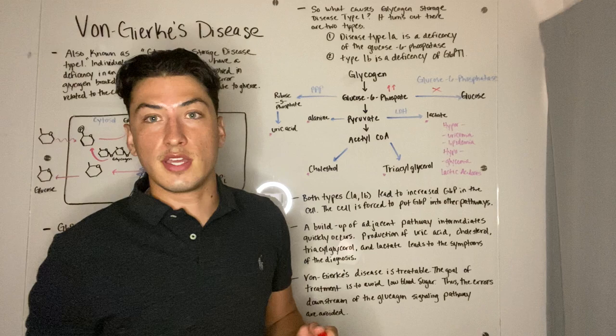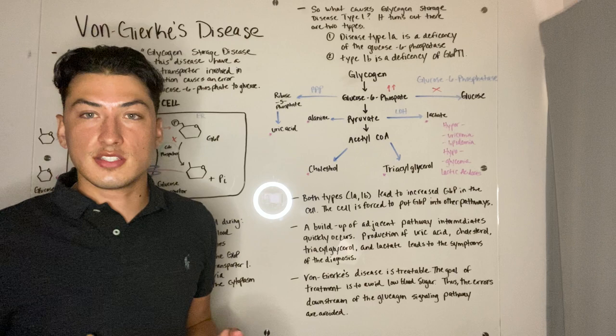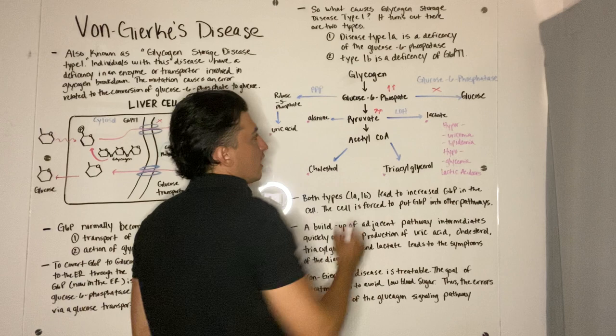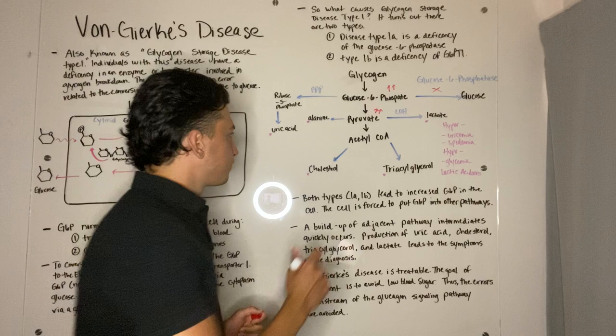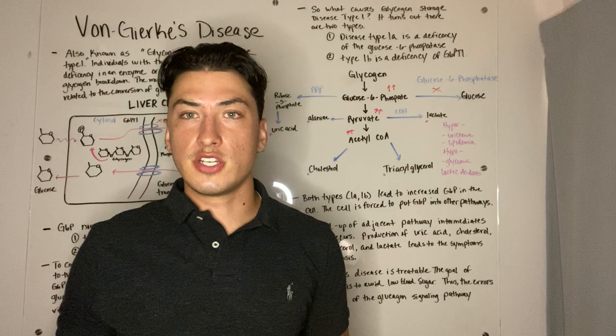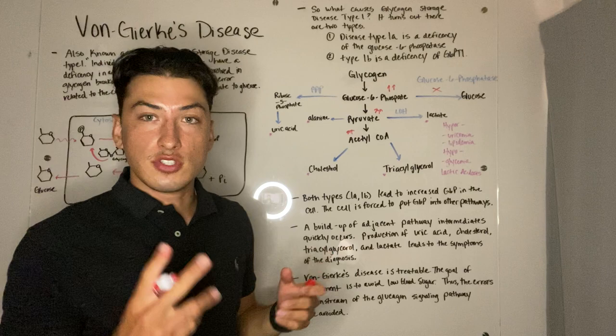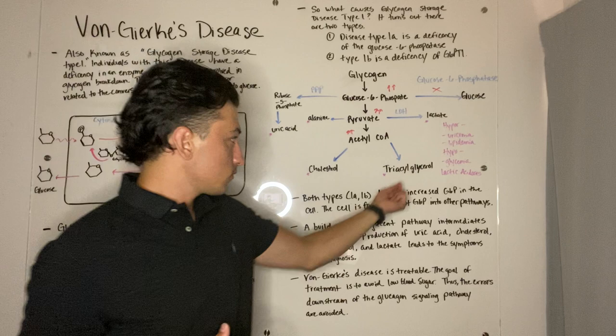So our glucose 6-phosphate will undergo glycolysis and produce pyruvate. Increased levels of pyruvate from glycolysis will feed into the pathways of acetyl-CoA, lactate, and alanine. An increase in acetyl-CoA will eventually overwhelm the citric acid cycle, and once this occurs it will only have two other places to go — so the acetyl-CoA will then produce cholesterol and triglycerol in this disease.